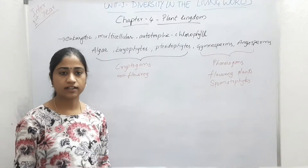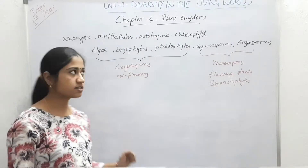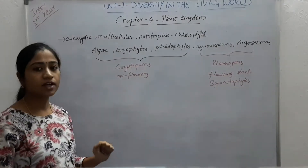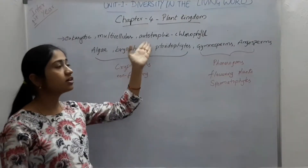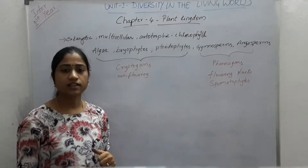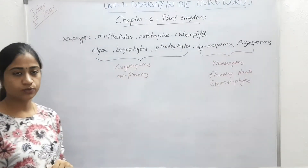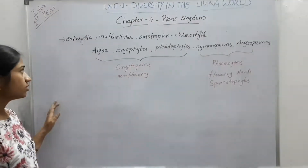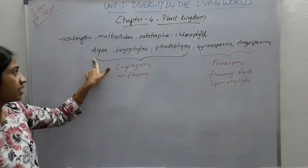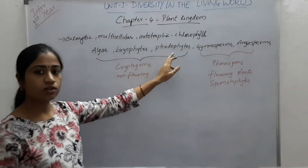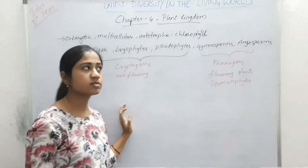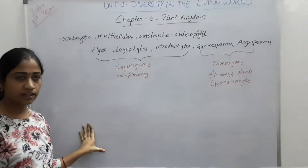The kingdom Plantae consists of all the eukaryotic and multicellular organisms. They are autotrophic, meaning they contain chlorophyll and they can prepare their own food. In this chapter we are going to discuss about algae, bryophytes, pteridophytes, gymnosperms and angiosperms under the kingdom Plantae.